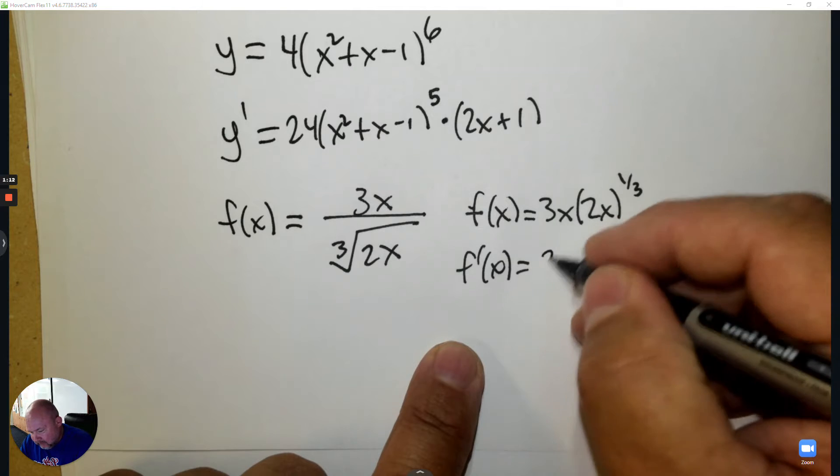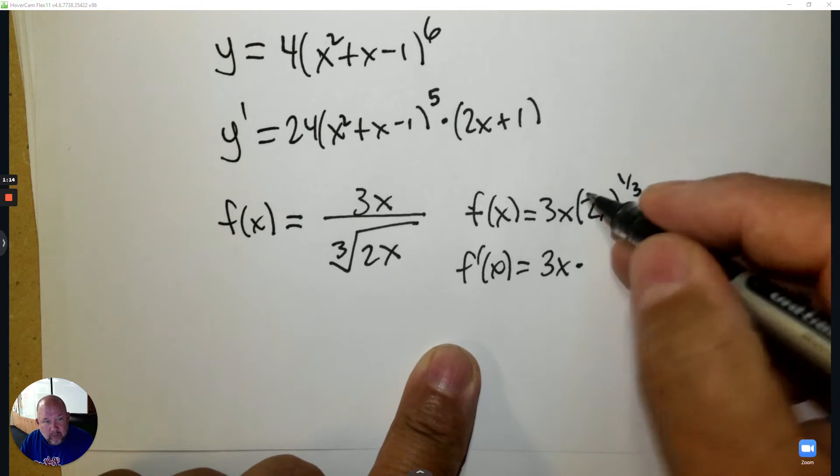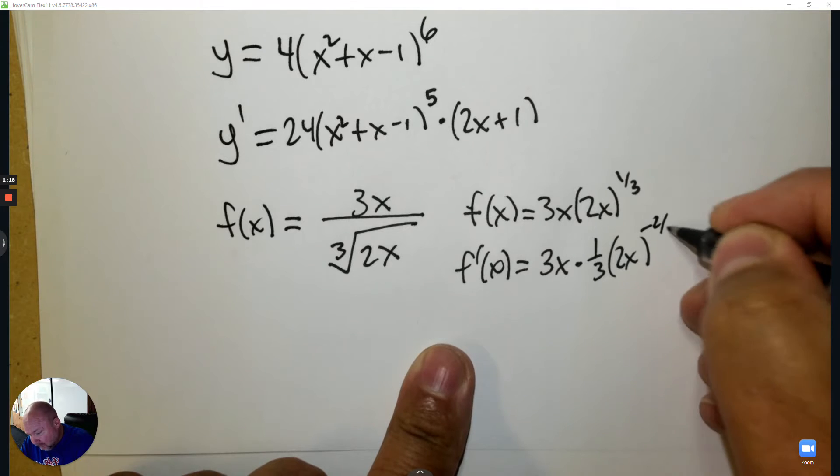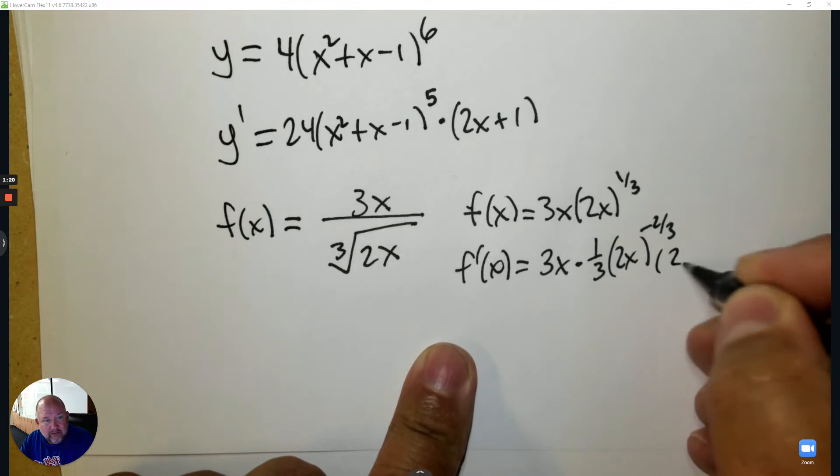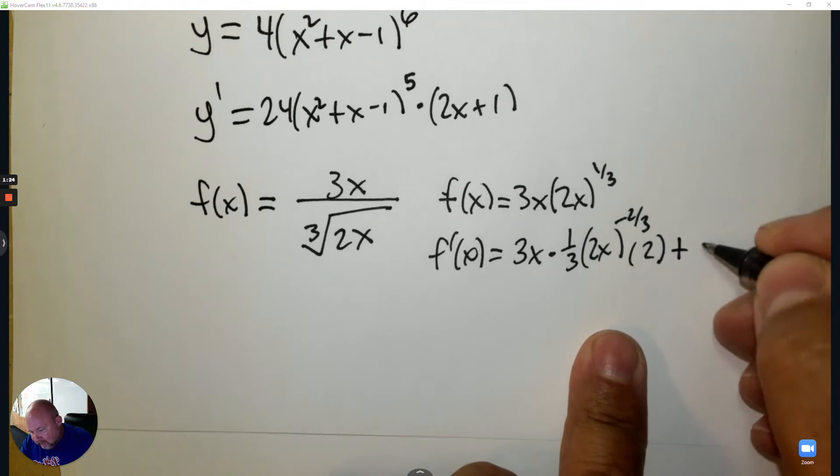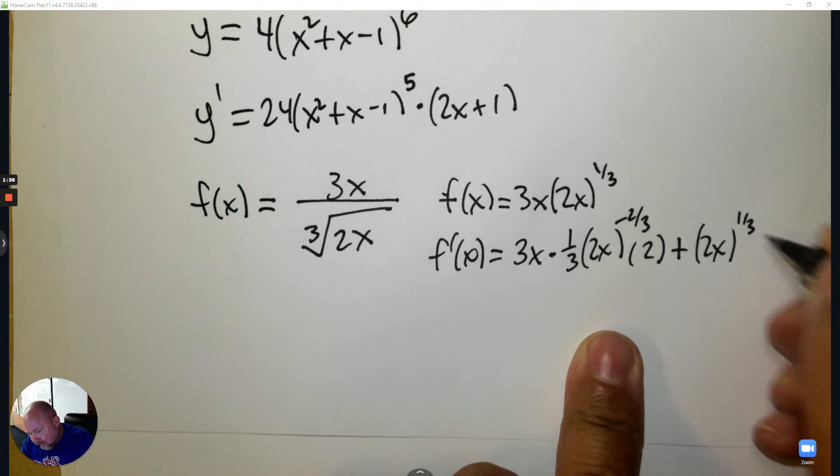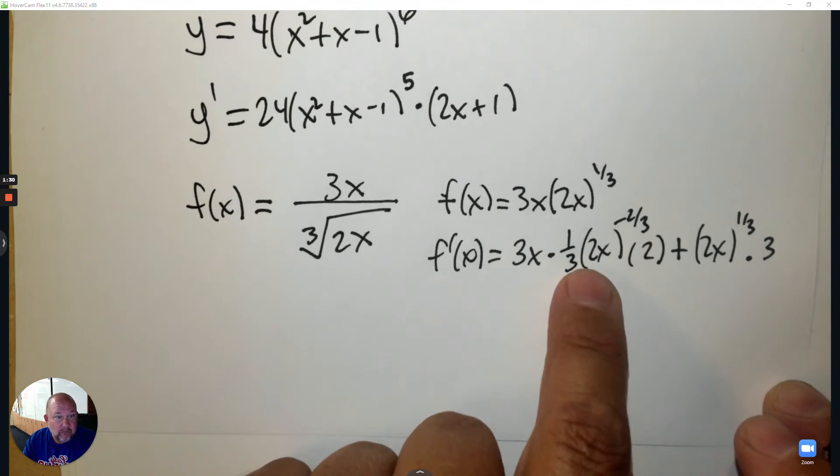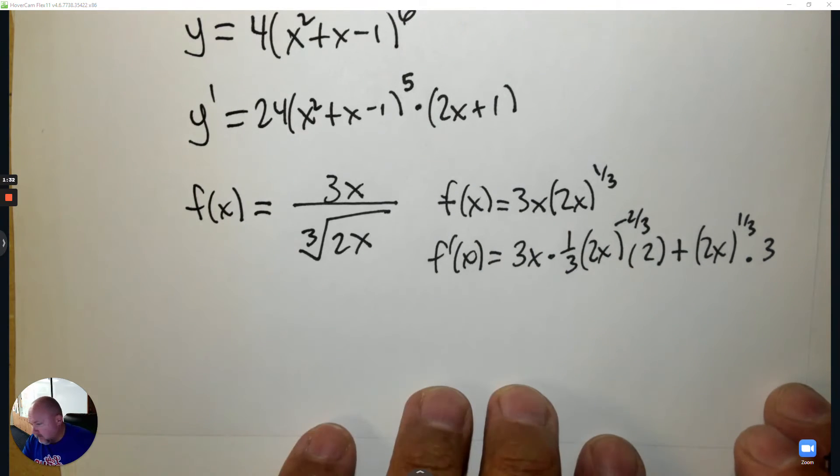So the product rule would be the first times the derivative of the second. So that's one-third 2x subtract 1, and then the hook is 2. So that's the derivative of the second, plus the second times the derivative of the first. So we have a chain rule, product rule, putting it together.